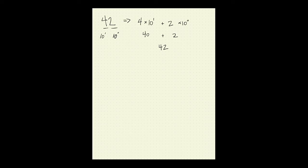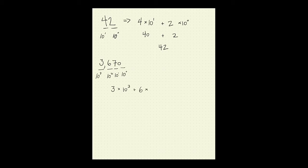If we take another number, say 3,670 — we would have our thousands place (10 to the 3), our hundreds (10 to the 2), our tens (10 to the 1), and our ones (10 to the 0). Expanded, this would be 3 times 10 to the 3, plus 6 times 10 to the 2, plus 7 times 10 to the 1, plus 0 times 10 to the 0 — giving us 3,000 plus 600 plus 70 plus 0, which is 3,670.